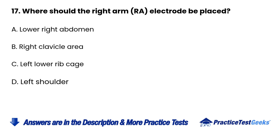17. Where should the right arm electrode be placed? A. Lower right abdomen. B. Right clavicle area. C. Left lower rib cage. D. Left shoulder.